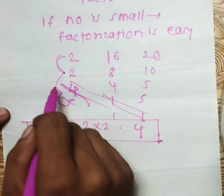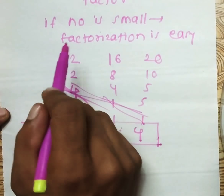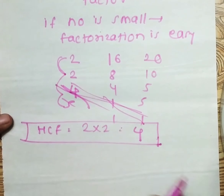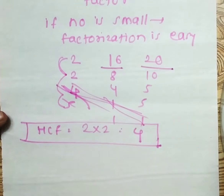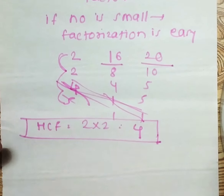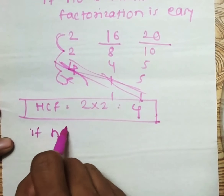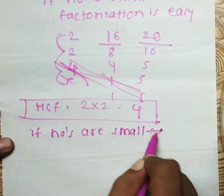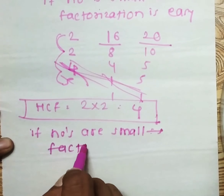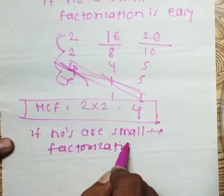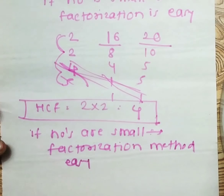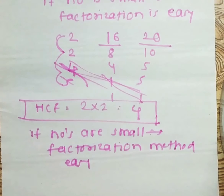So HCF means taking only the common factors. 2 is a common factor and 2 is a common factor, so 2 × 2 = 4 is the HCF of 16 and 20. If numbers are small, the factorization method is always easy because we can factorize them quickly.